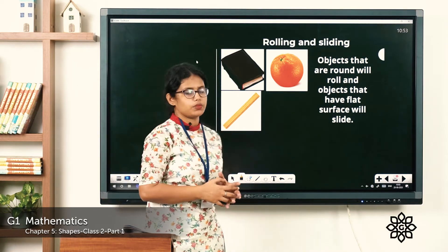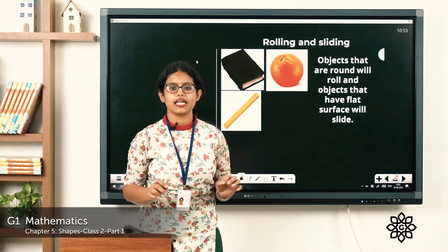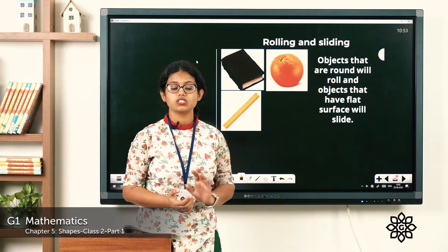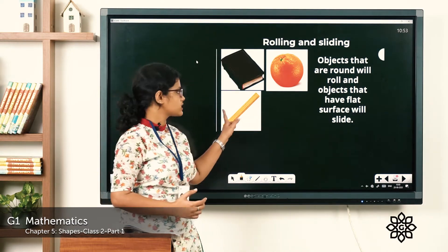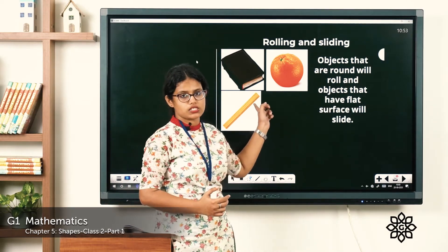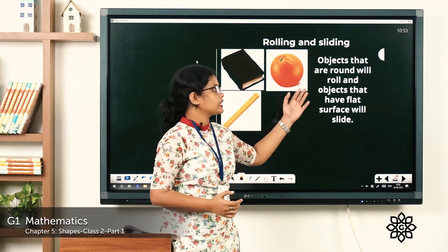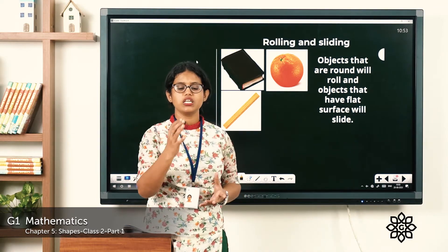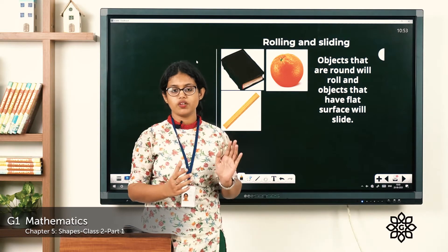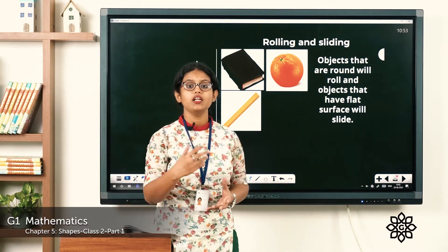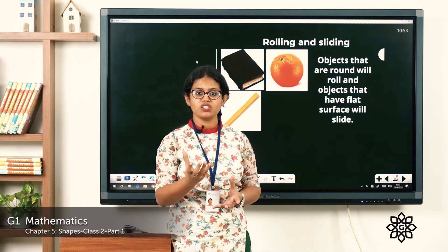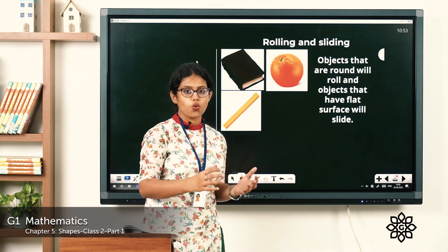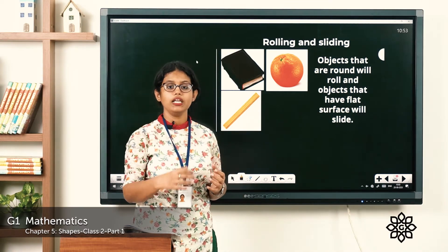Another example: if we keep a scale on the table, will it slide or roll? When we push it, it will slide but it won't roll because it has a flat surface. What about an orange? If we keep an orange on the table and move it, will it roll or slide? It will roll. What is the shape of an orange? It is round in shape. So things which are round will roll, and things which have a flat surface will slide.